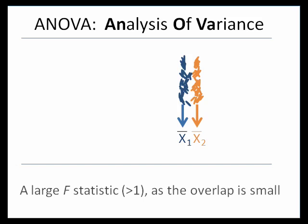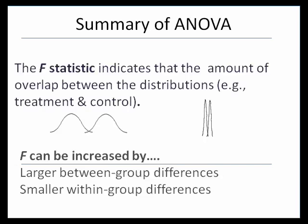The bigger the F-statistic, the smaller the overlap between two or more groups, and the more certain we can be that there's a real difference not just due to sampling error. We can increase the ANOVA results by having a larger between-group difference or smaller within-group differences. You could get smaller within-group differences by working with a population that's more similar, where there's not a lot of variation between members, or by using dependent measures that are reliable and more dependable.